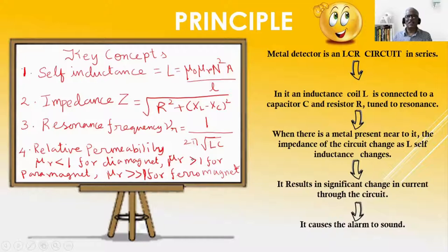For example, gold is taken through the metal detector for which μr is less than 1 as it is diamagnetic. Therefore, L is reduced. As L is reduced, frequency increases. Impedance also increases. Current falls from maximum value. The alarm is turned on.